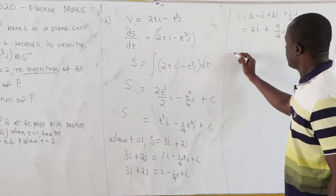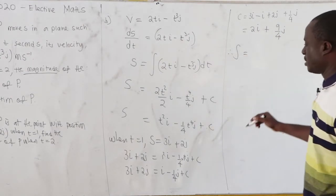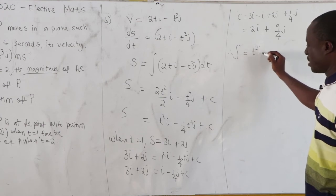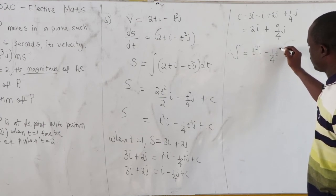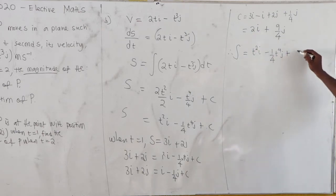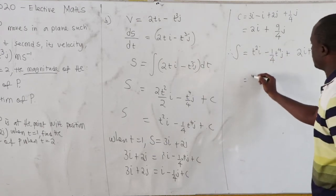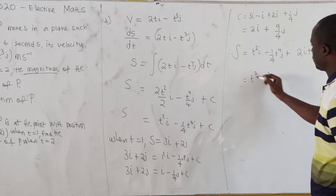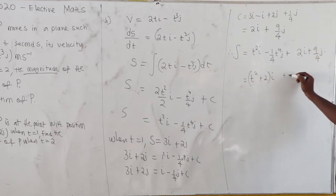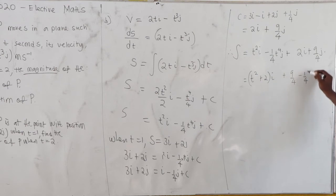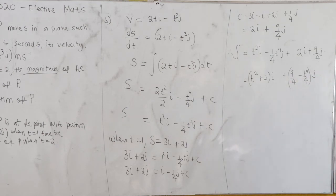Our displacement equals t²i minus (1/4)t⁴j plus 2i plus (9/4)j. Grouping terms: (t² + 2)i plus (9/4 minus (1/4)t⁴)j. This is our revised displacement expression.